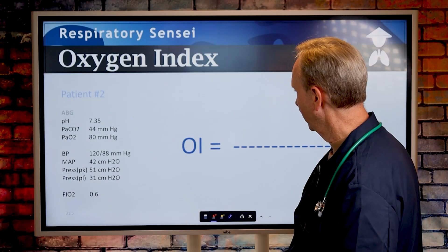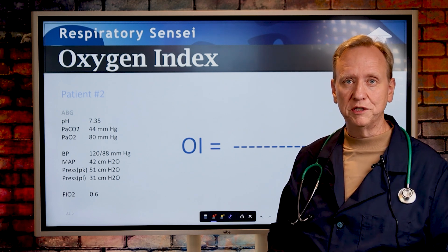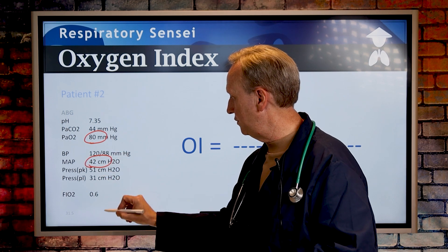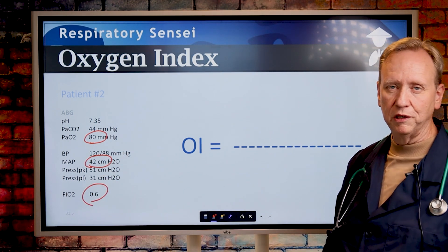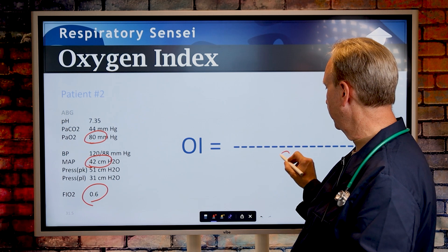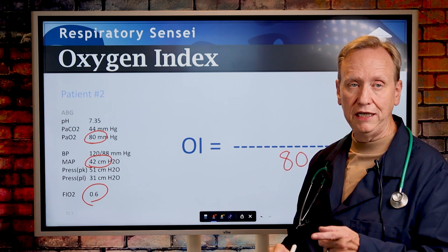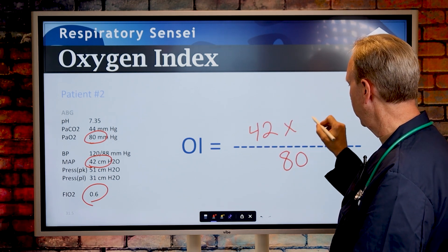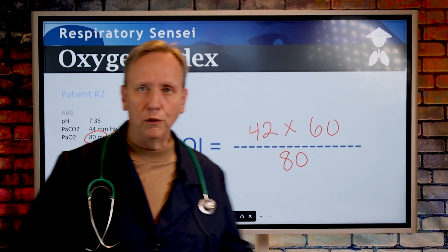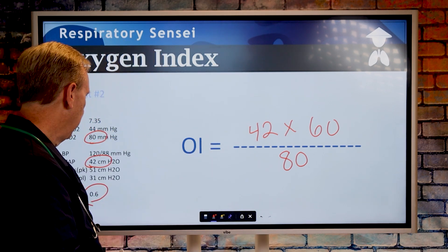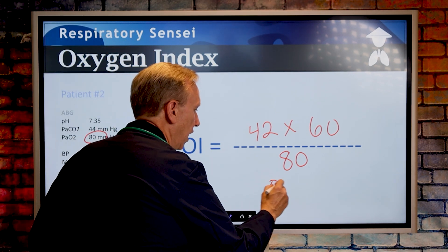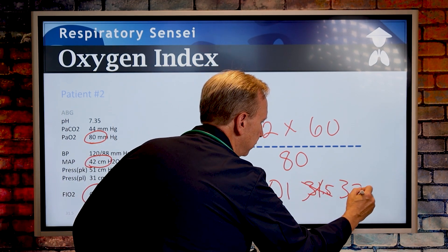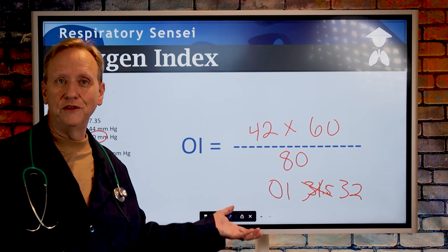Here's another patient. We pick out our values: PaO2 is 80, mean airway pressure is 42, and FiO2 is 60%. The PaO2 always goes in the denominator, so we have 80 there. Then mean airway pressure of 42 multiplied by 60%. Doing the math: 42 times 60 divided by 80 gives us an Oxygen Index of 31.5 — I'll round that to 32. So this patient has an oxygen index of 32.